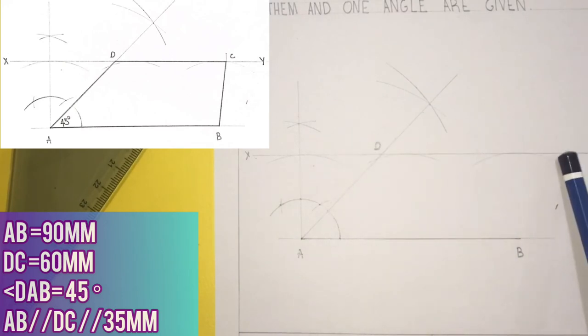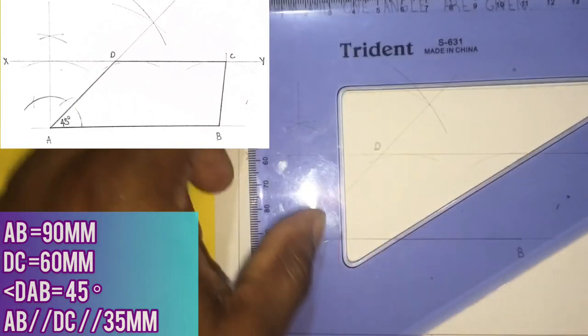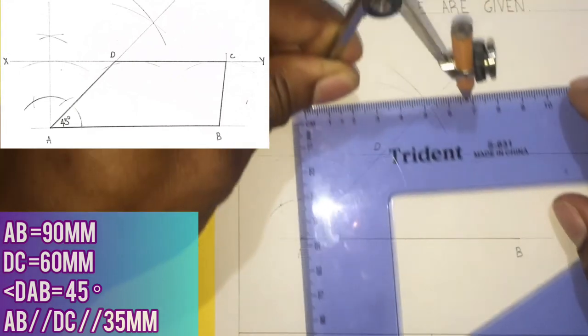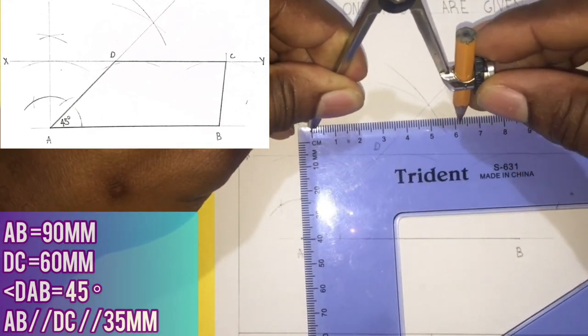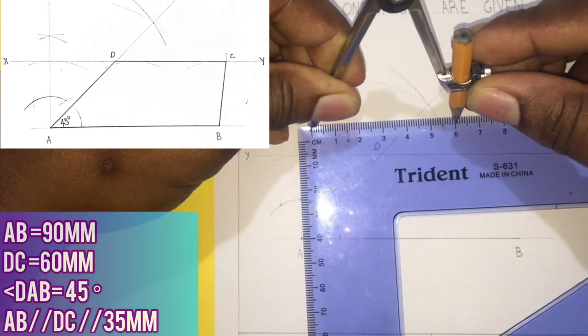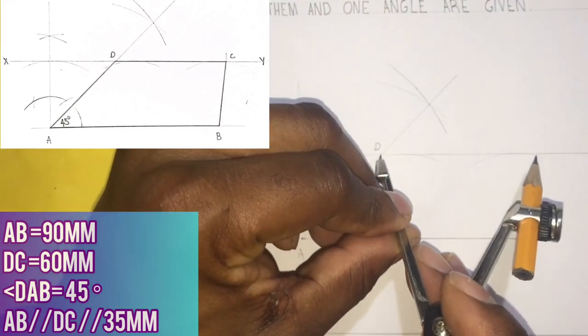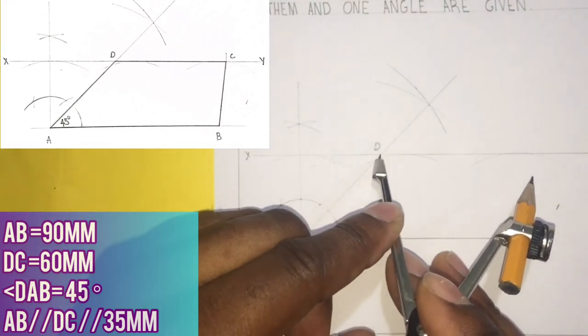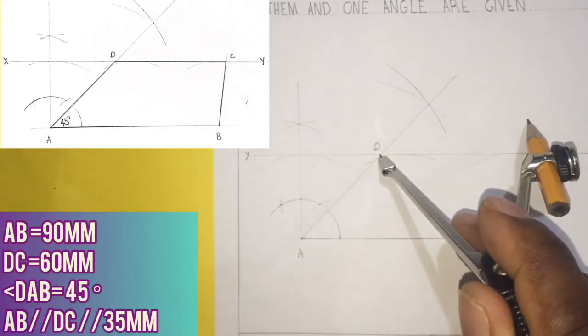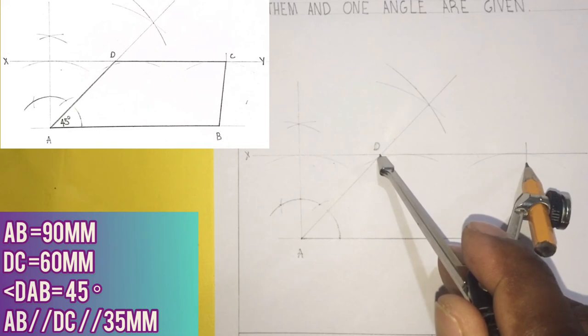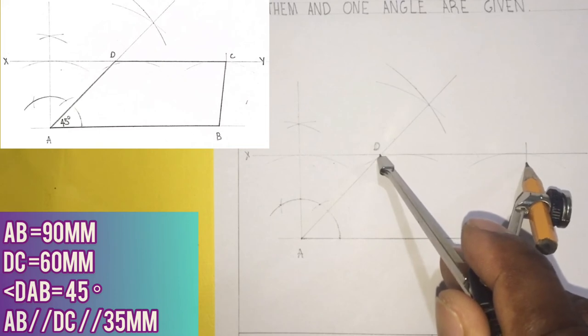Now point C is 60 millimeters away from D, so I will open my compass to 60 millimeters and I will put my compass at point D and I will scribe an arc to cut my XY line. This arc will give me point C.